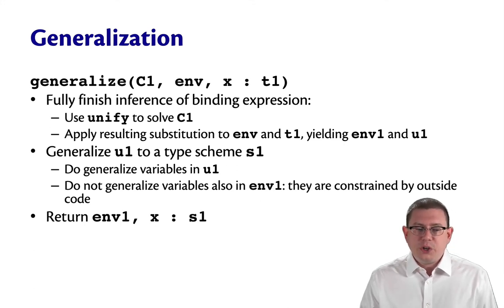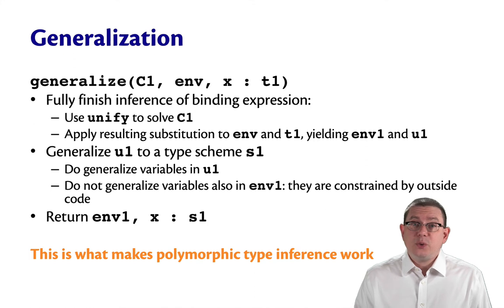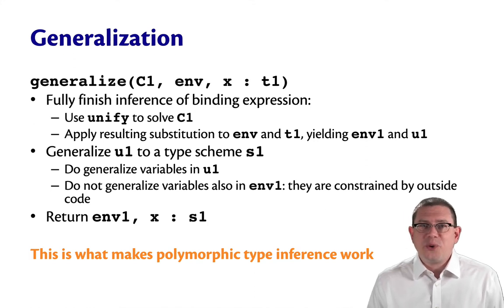So generalize then returns that environment that had the substitution applied to it, as well as the binding of X to this generalized type scheme S1.